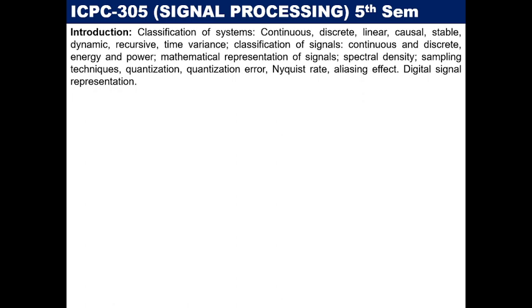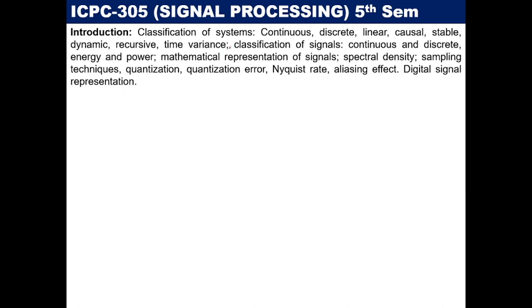We will start with the introductory part of signal processing. In the introduction portion, we will cover the classification of systems and we will start with signals. Basically, there are four types of signals: continuous in time and continuous in value; continuous in time and discrete in value; discrete in time and continuous in value; and discrete in time and discrete in value. Based on these four types, different classifications such as continuous, discrete, energy, and power signals will be covered. We will also cover mathematical representation of signals, elementary signals, spectral density, sampling theorem, quantization, quantization error, and aliasing effect.